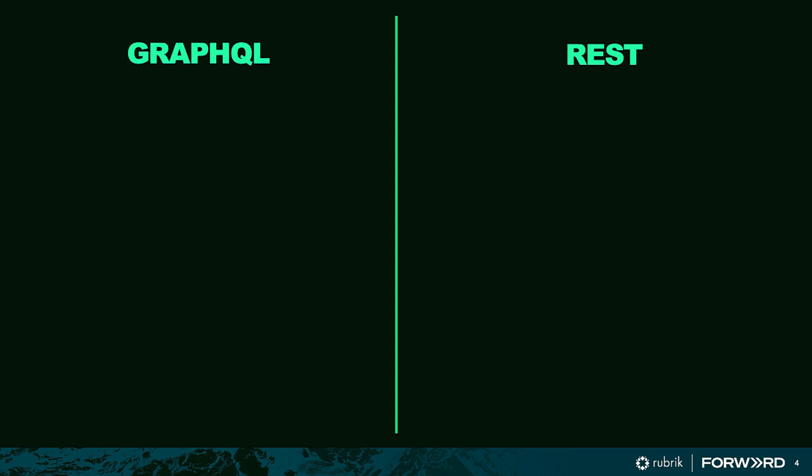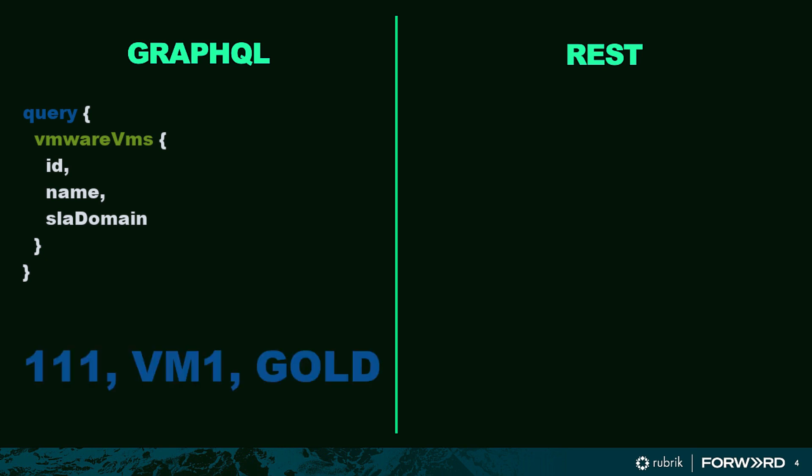With GraphQL, we'd execute a query that looks something like this. We define our query, and then we specify exactly what data we would like to fetch. Our response performs all the querying, fetching, and filtering on the server side and returns only those values back that we requested.